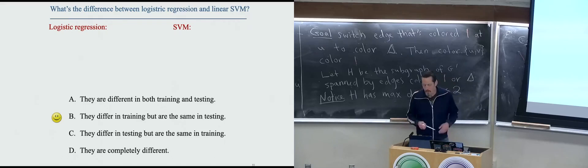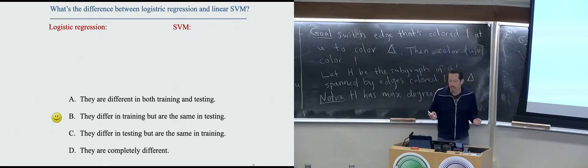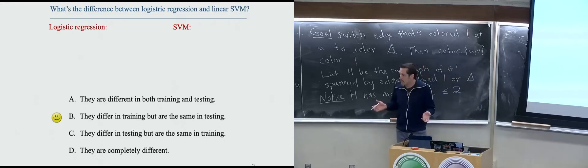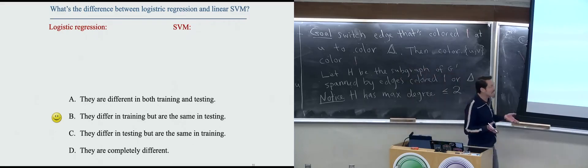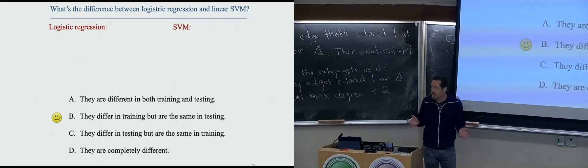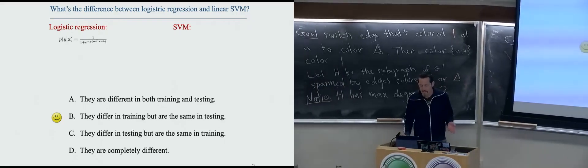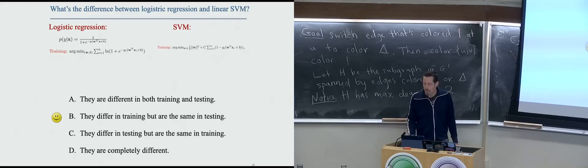We're past time, so let's start now. We left off with the question: what's the difference between logistic regression and support vector machines? The answer is that they have different loss functions they're optimizing. So they are different at training time. But at test time, predicting, they're both just f(x) = wx + b. They're both just linear algebra at decision time. Logistic regression is optimizing the log loss, and support vector machines are optimizing the hinge loss plus the size of the weight vector.